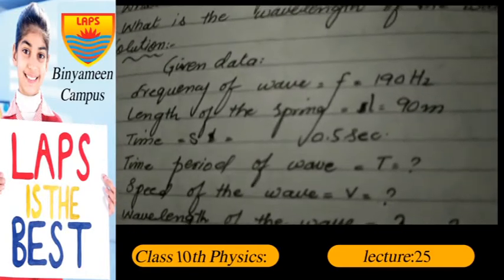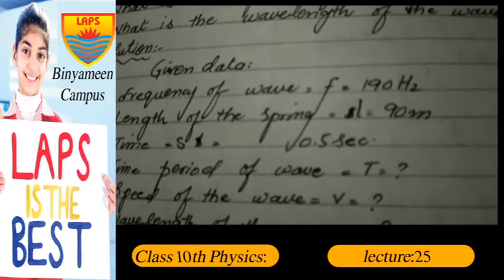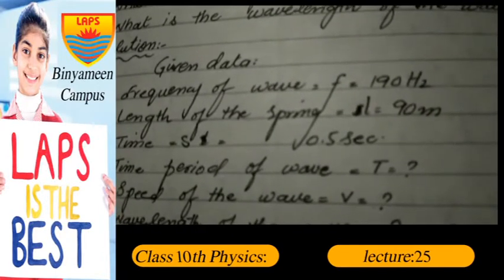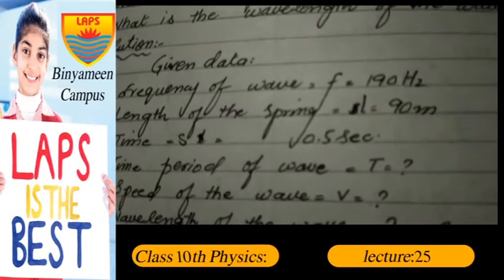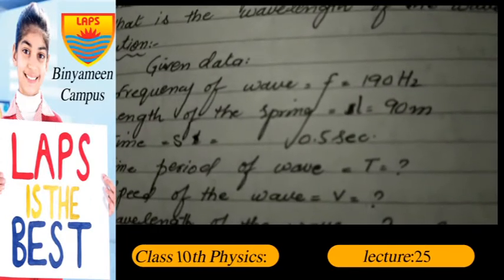Frequency of wave f = 190 Hertz, length of spring l = 90 meters, time t = 0.5 seconds.